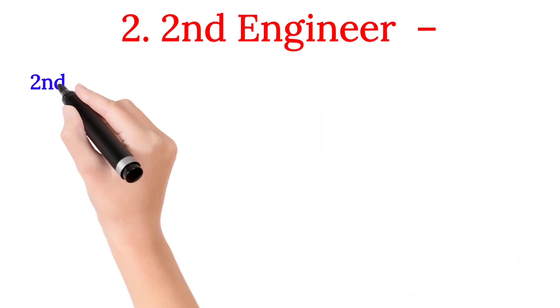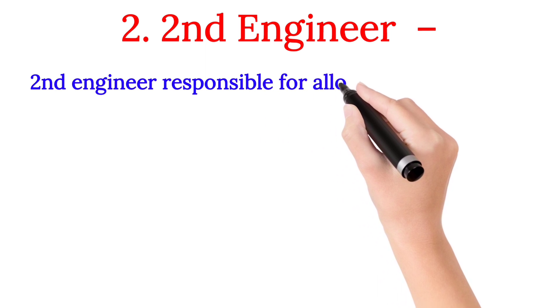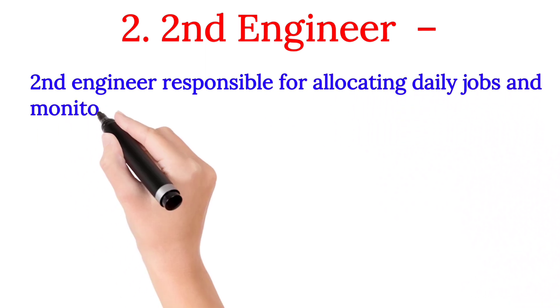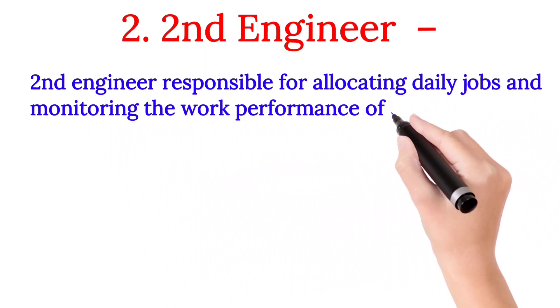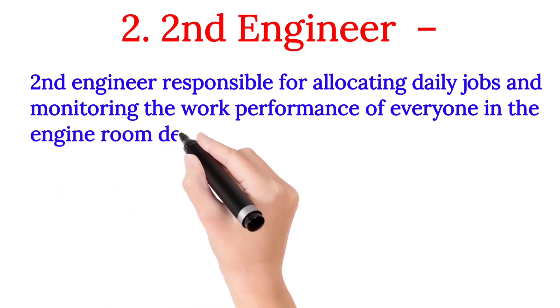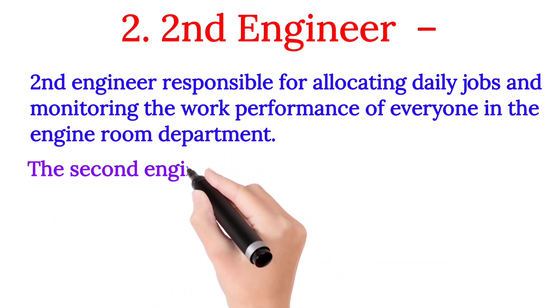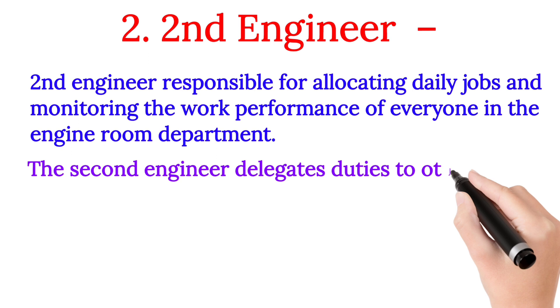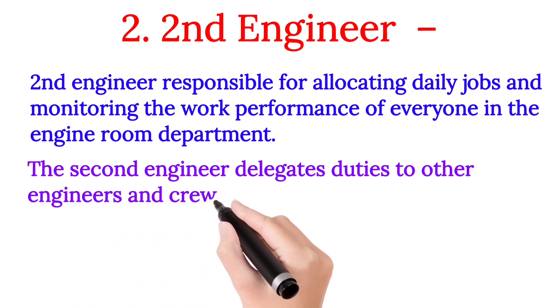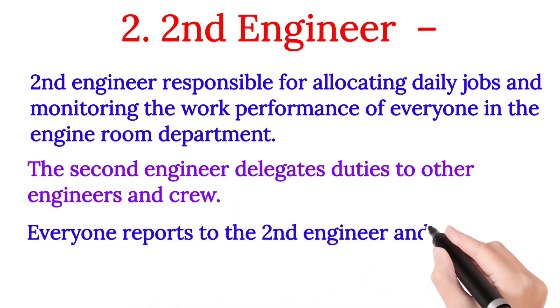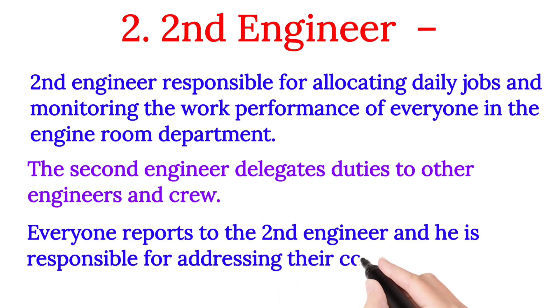Number two: Second Engineer. The Second Engineer is responsible for allocating daily jobs and monitoring the work performance of everyone in the engine room department. The Second Engineer delegates duties to other engineers and crew. Everyone reports to the Second Engineer, and he is responsible for addressing their concerns and complaints.